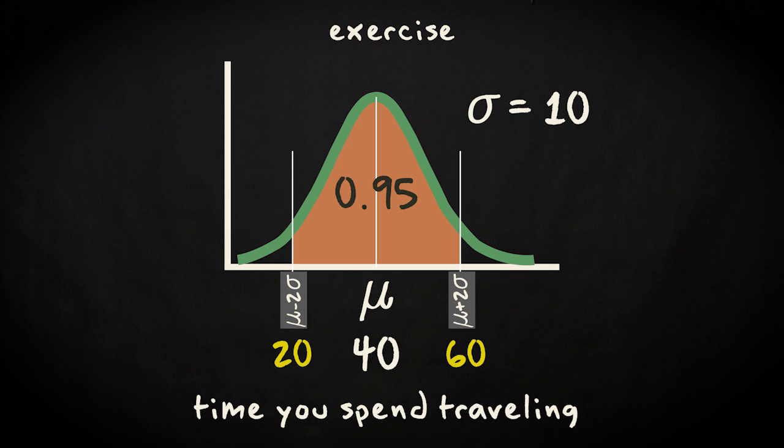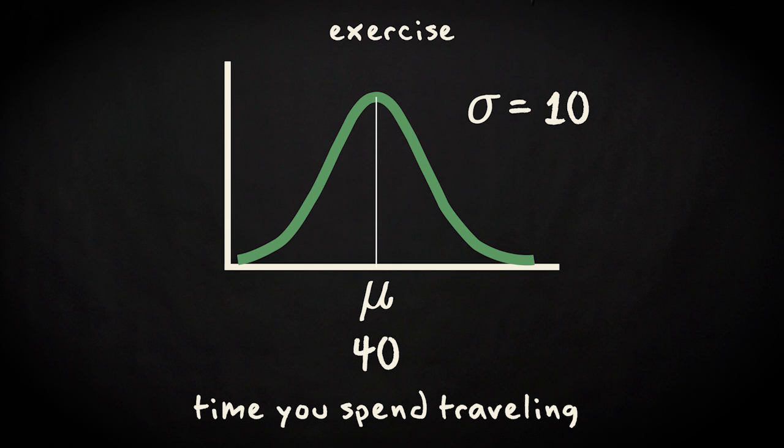We can also turn the question around. Let's assume you'd like to know the probability to be traveling more than 50 minutes. Can you calculate it knowing that your average travel time is 40 minutes with a standard deviation of 10 minutes and the 1 sigma rule?